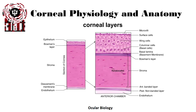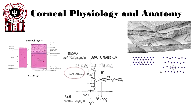Following that, there's Descemet's membrane and the endothelium, the endothelium playing a critical role in maintaining hydration of the cornea. The endothelium provides the pump function for the cornea and keeps the stroma relatively dehydrated. The stroma is typically around 80% hydrated because the endothelium pumps out water at all times from the cornea.